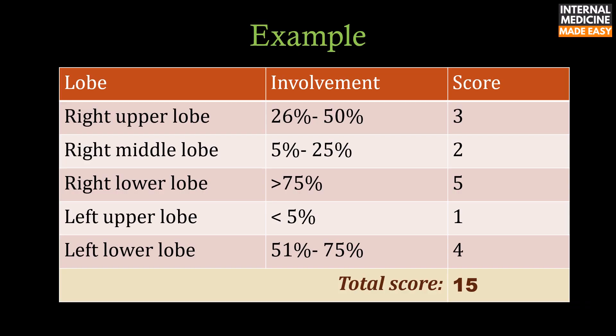Now an example: if the right upper lobe has 26 to 50% involvement, the score will be 3. If the right middle lobe has 5 to 25% involvement, the score will be 2. If the right lower lobe has more than 75% involvement, the score will be 5. If the left upper lobe has less than 5% involvement, the score will be 1. And if the left lower lobe has 51 to 75% involvement, the score will be 4. So in total, the score will be 15.